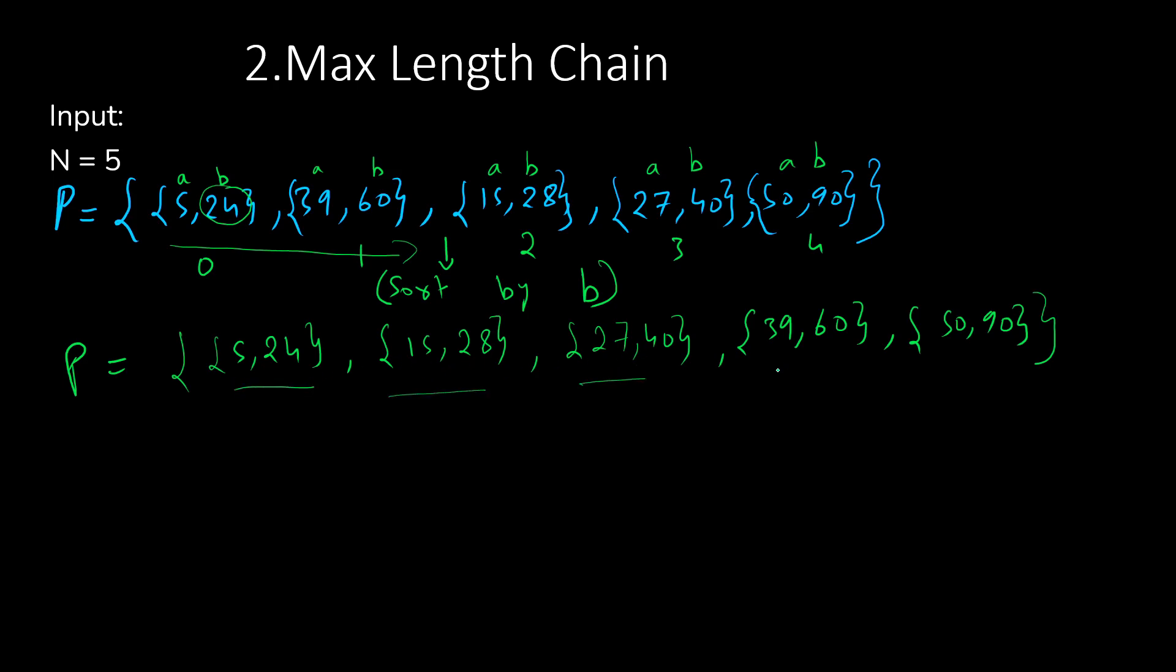Now we are going to take two pointers. One pointer will be I, which will be starting from the left side, and one pointer will be starting from the next index of I, and we will call that the J pointer. We are going to check the left side of the I pointer, which is the B object value, and we are going to take the A object value from J. For this to be in increasing order, B should always be smaller than A.